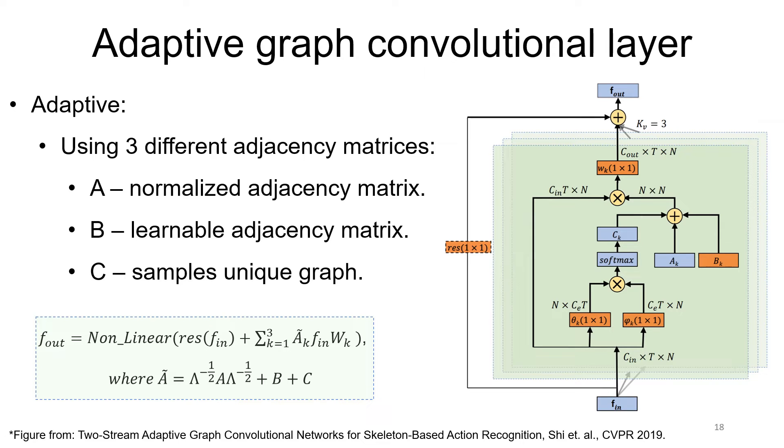Besides the fixed normalized adjacency matrix, it can be beneficial to add another learnable adjacency matrix that is completely data-driven and can be different between the different layers of the spatiotemporal graph convolution layers.